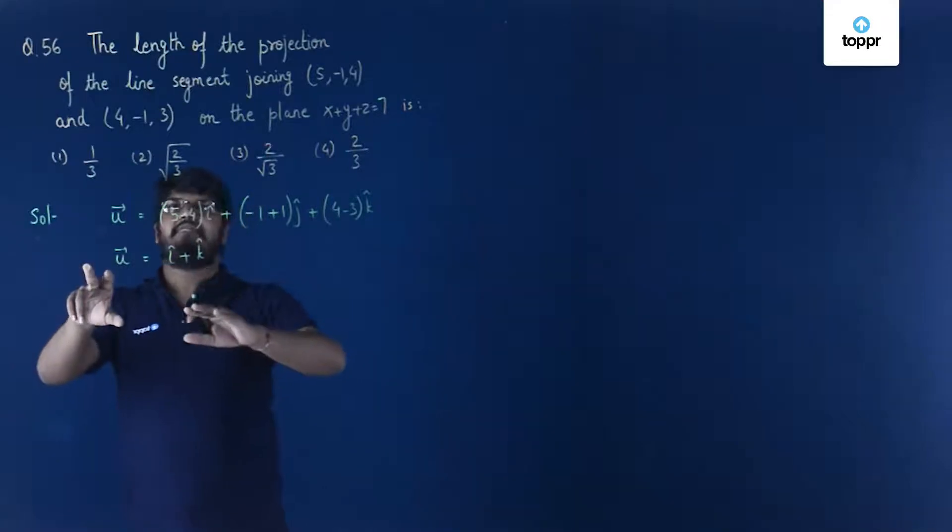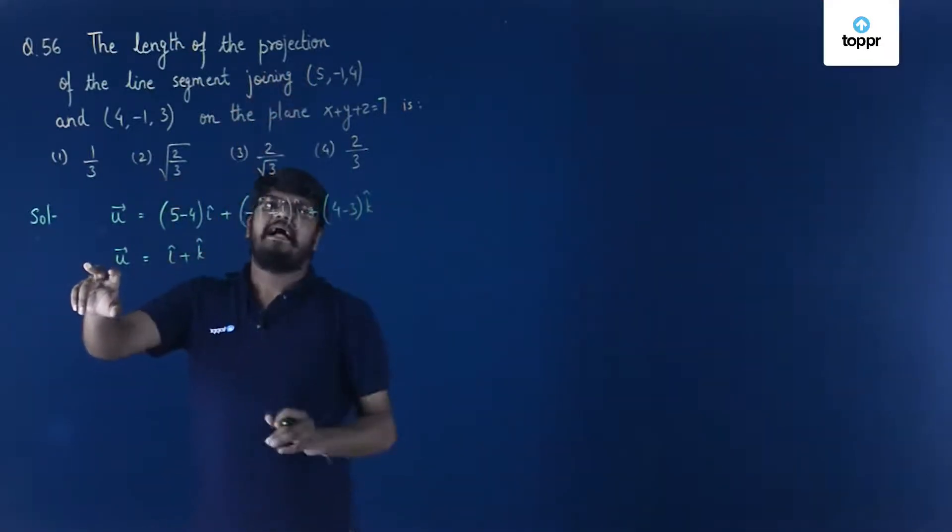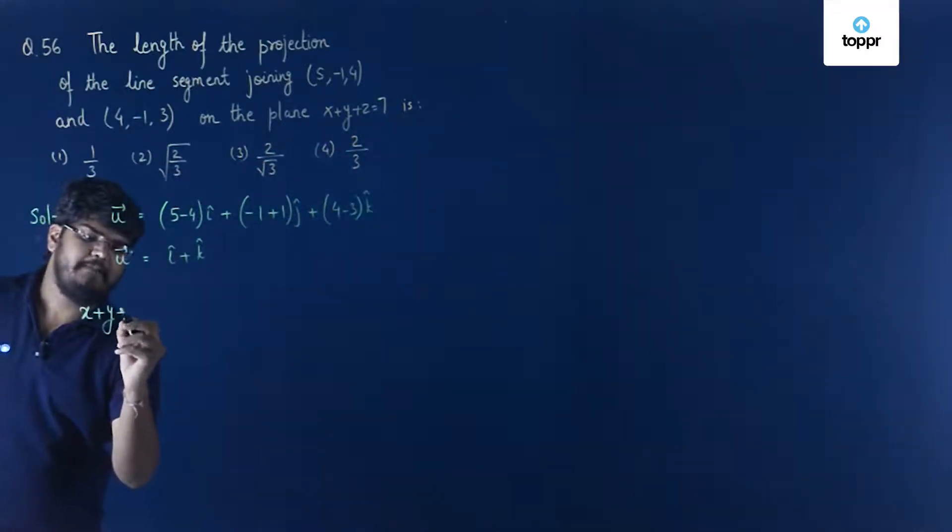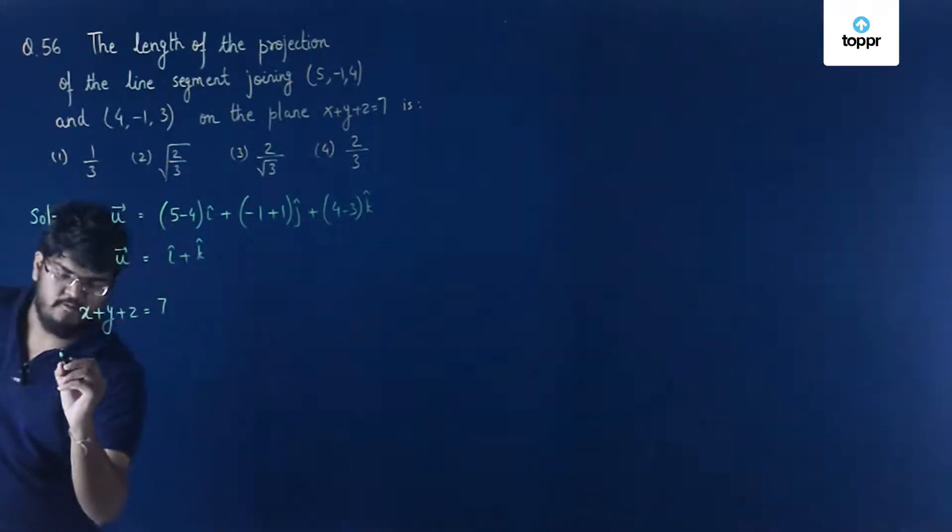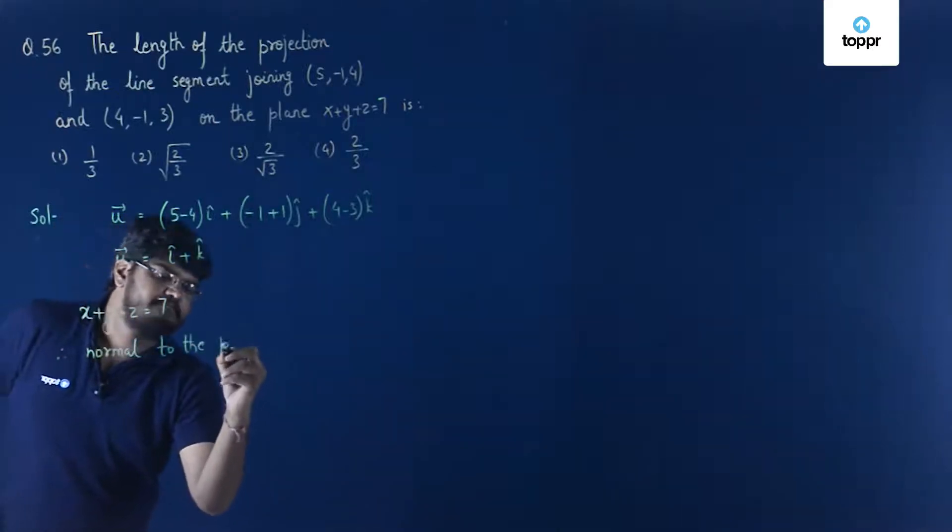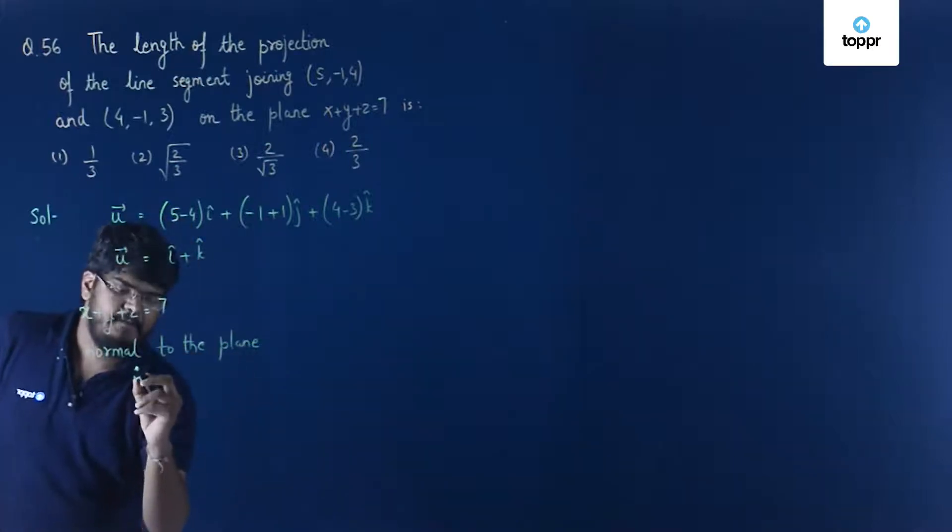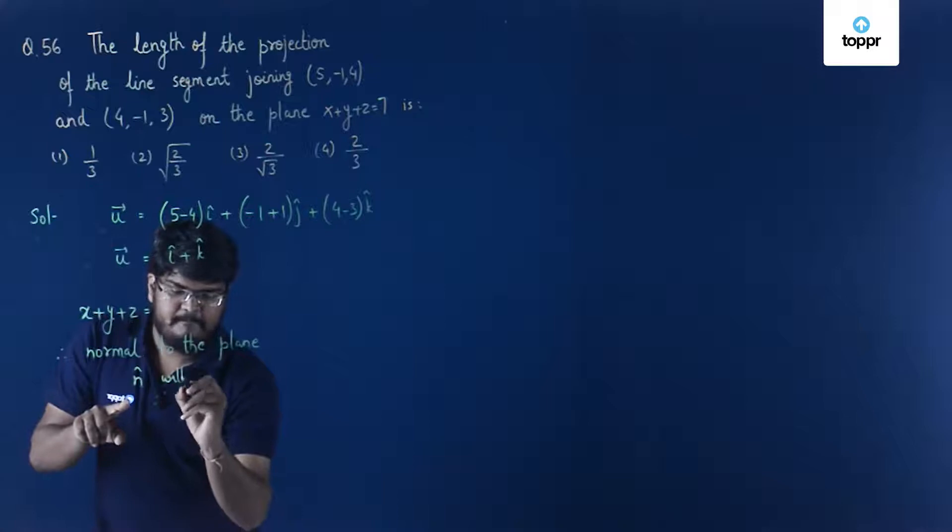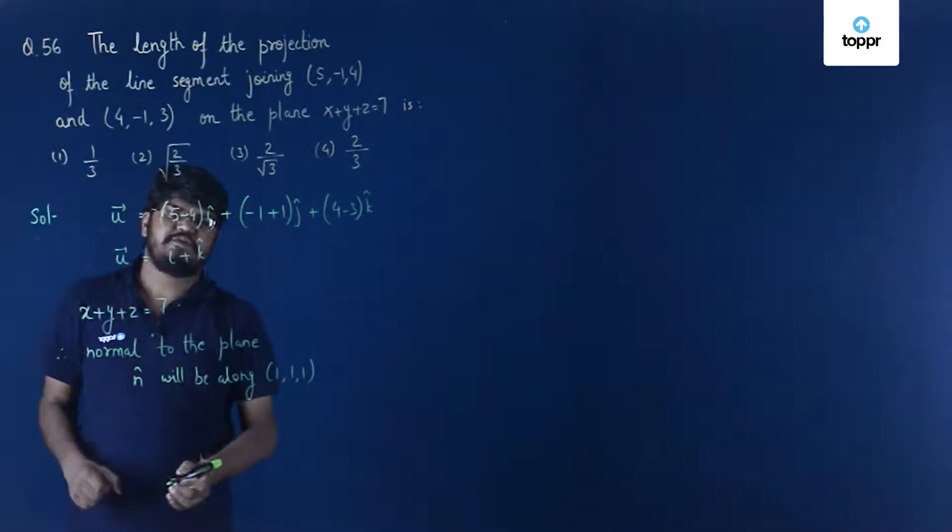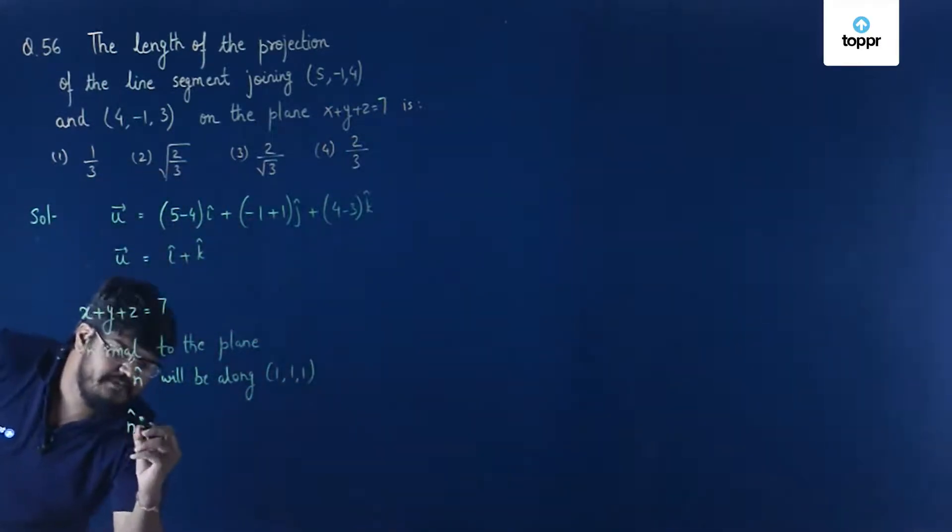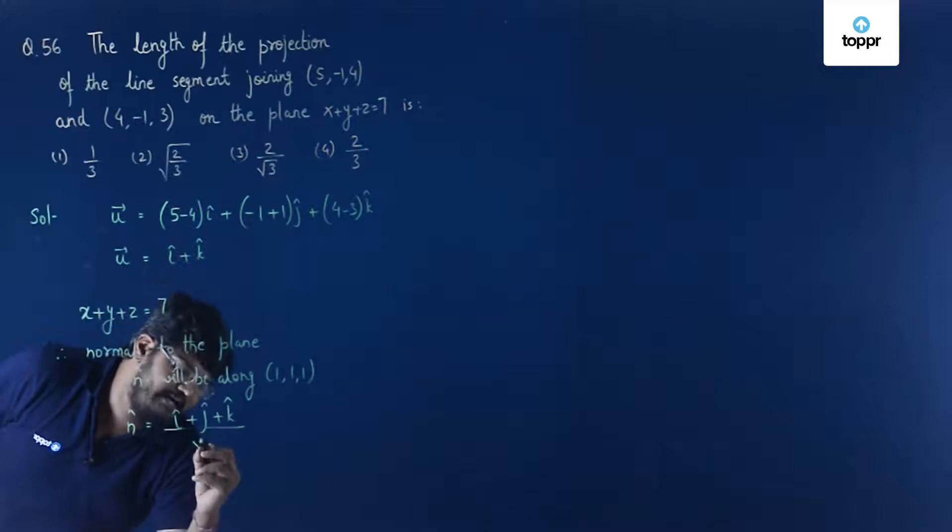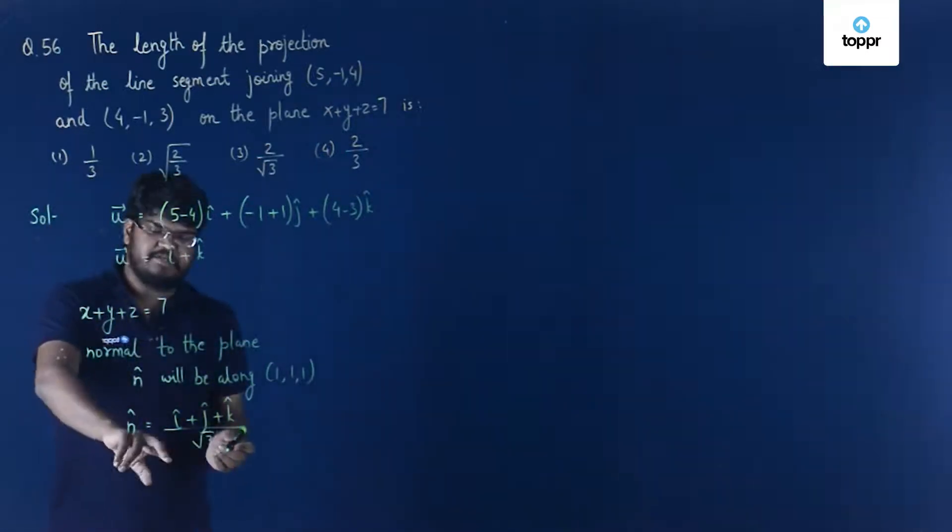Now we have our vector and now we have to find the length of the projection. For that we need to first find the normal to the plane x + y + z = 7. Therefore, normal to the plane n cap will be along (1, 1, 1), which are the direction ratios of the plane. So n cap will be equal to (i cap + j cap + k cap) / √3. Why have we divided it by √3? Because it's a unit vector.